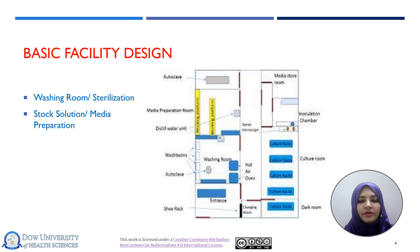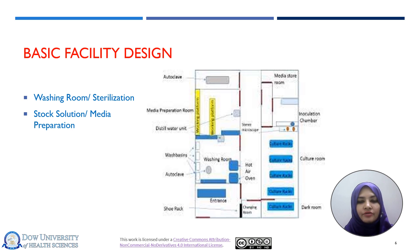An autoclave can be used for media preparation, and then transfer of explants can be done in the sterilized or inoculation room. Another very important part of the basic tissue culture facility is the stock solution or media preparation room. Here, important instruments are required such as a pH meter, stirrer, different basic chemicals, and stock solutions refrigerated at a specific temperature such as 4 degrees centigrade.